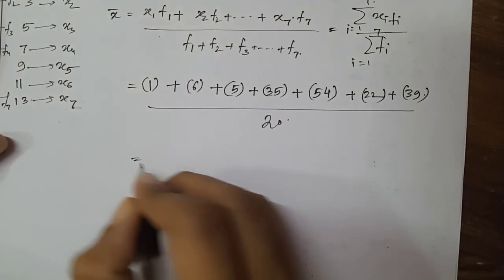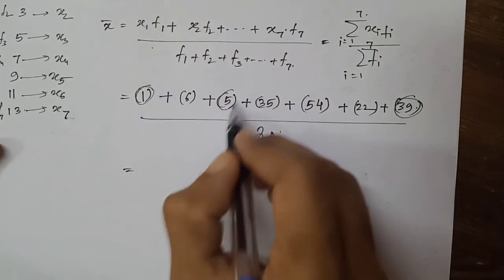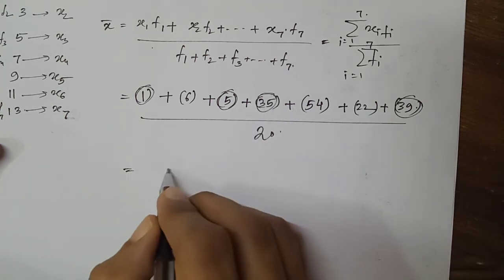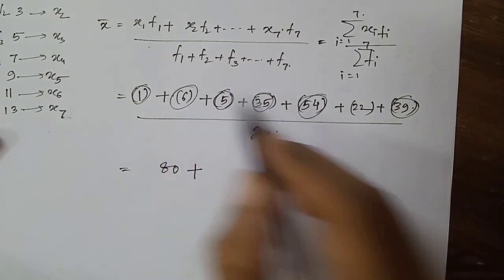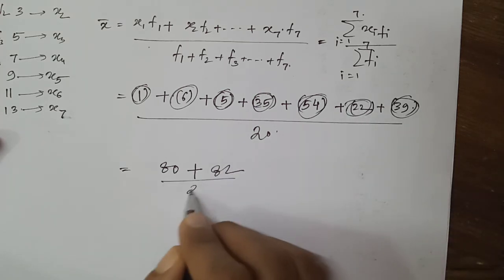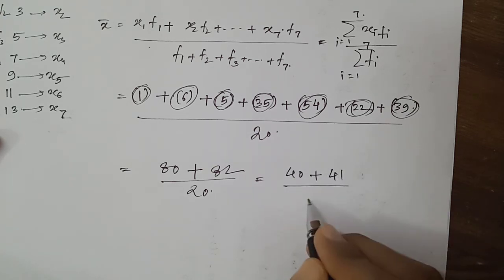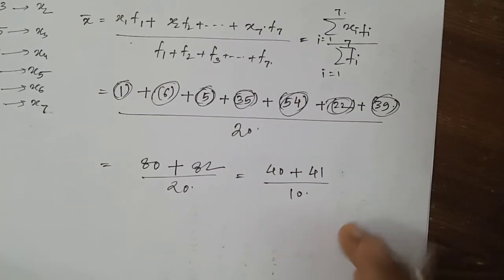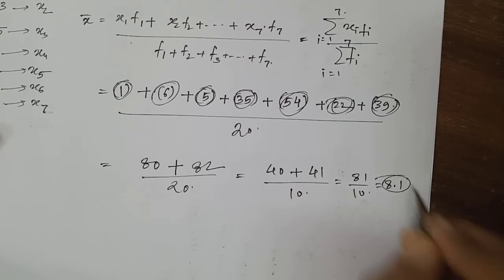Calculating the numerator: 1 + 6 = 7, plus 5 = 12... working through: 39 + 1 = 40, plus 45 gives 80 — actually 80 + 54 = 134, then adding further terms: we get 162 divided by 20, which simplifies to 81 divided by 10, which is 8.1. So 8.1 is the required mean.